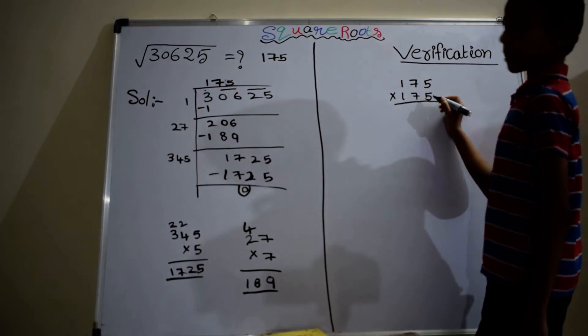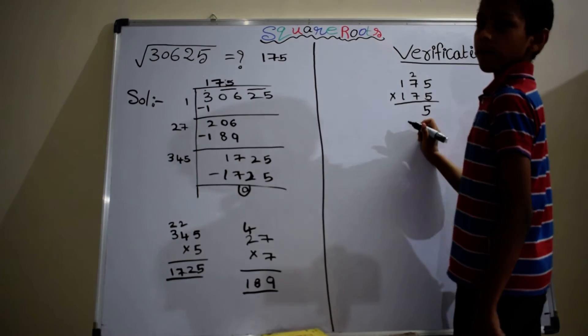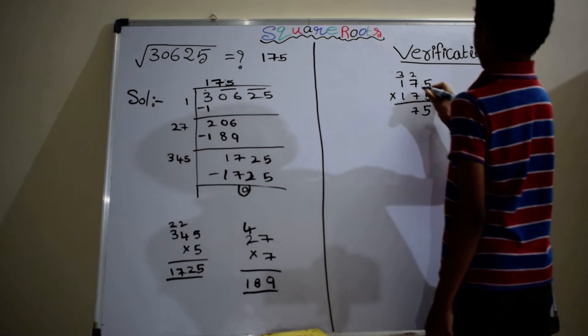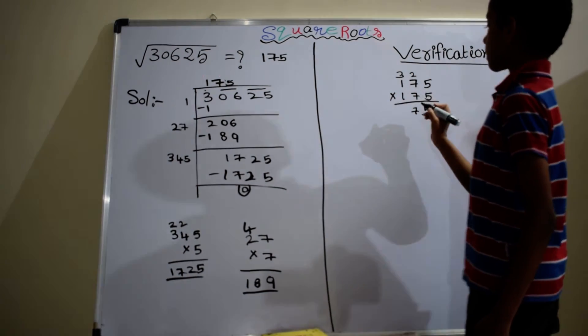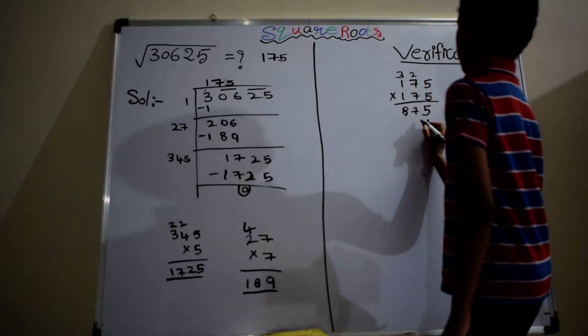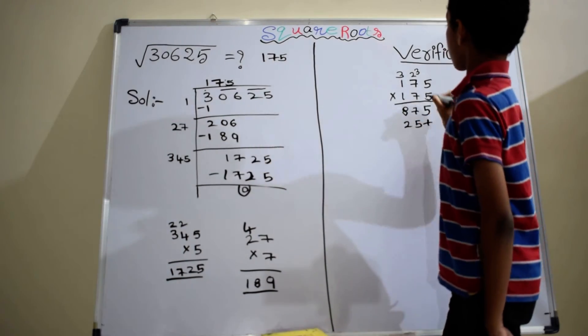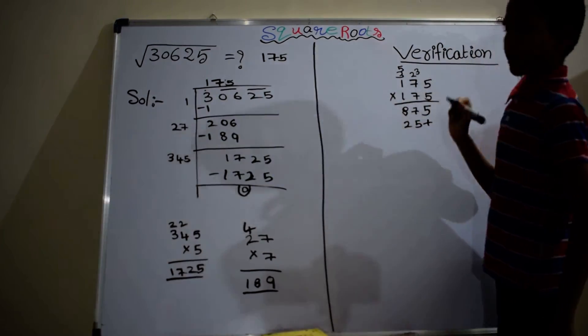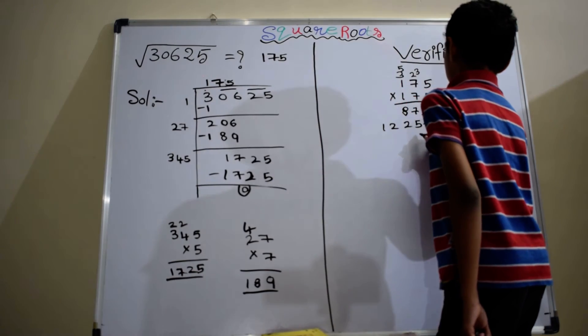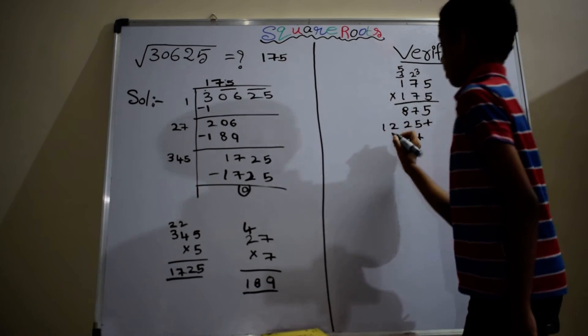5 into 5, 25. 7 into 5, 35 plus 2, 37. 5 into 1, 5 plus 3, 8. Plus 7 into 5, 35. 7 into 7, 49 plus 3, 52.